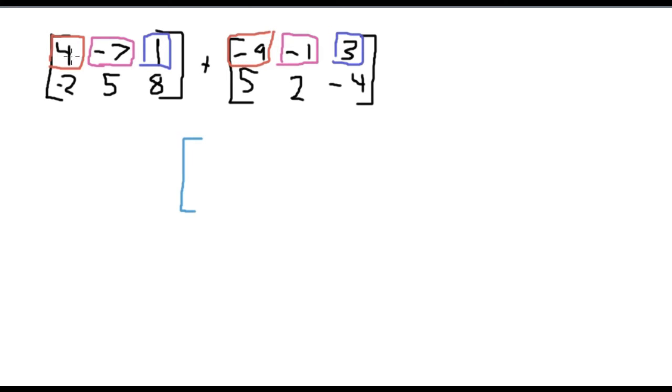So negative 9 plus 4 is negative 5. Then we have negative 1 plus negative 7, which is negative 8. Then we have 3 plus 1, which is 4. And there's our first line.